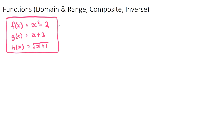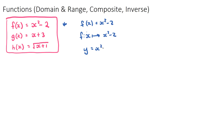I've written three functions up and I'm just going to look at the first one. There are a few different ways we can write what a function is. I've written here f(x) is equal to x squared minus two. f(x) just means the output variable if we have an input variable of x. Another way we can write this is f with a colon and a little arrow: x maps to x squared minus two. Or we could just put y equals x squared minus two. All of these mean the same thing — it depends on what textbook you use.